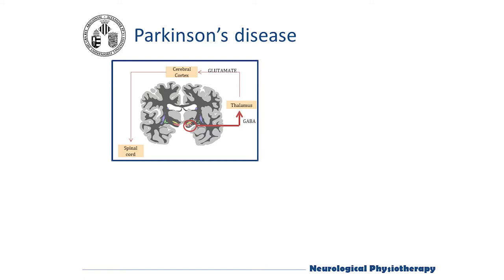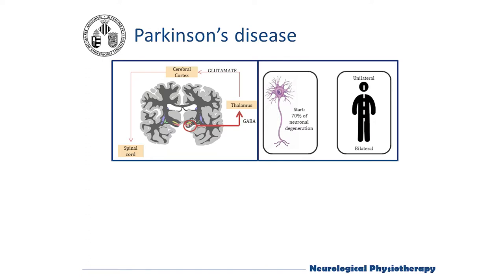The area of the central nervous system mainly affected by this neurodegeneration is one of the four basal ganglia, specifically the compact portion of the substantia nigra, which consequently affects communication with other centers of the cerebral cortex. It is progressive, since neurodegeneration continues to advance over time, and the classic signs of the disease that initially begin on one side of the body end up affecting bilaterally.